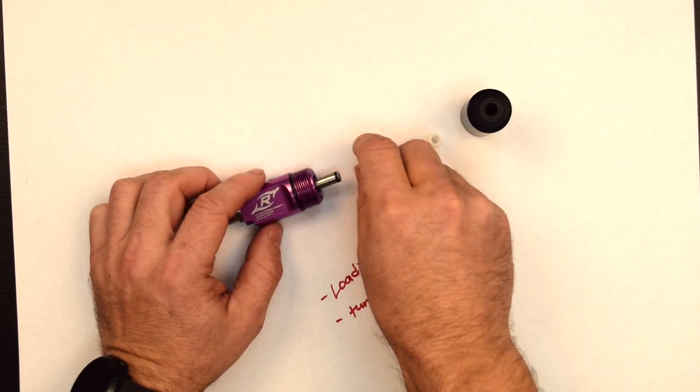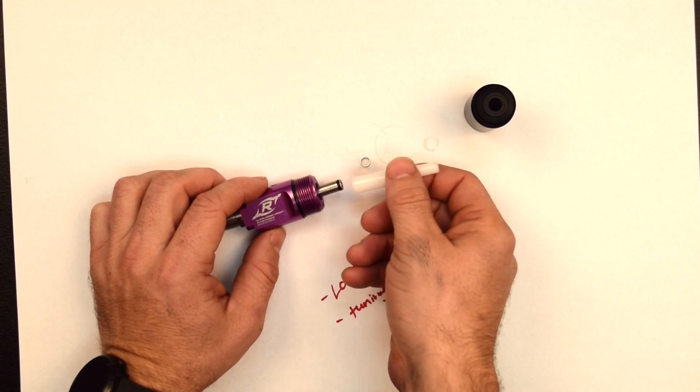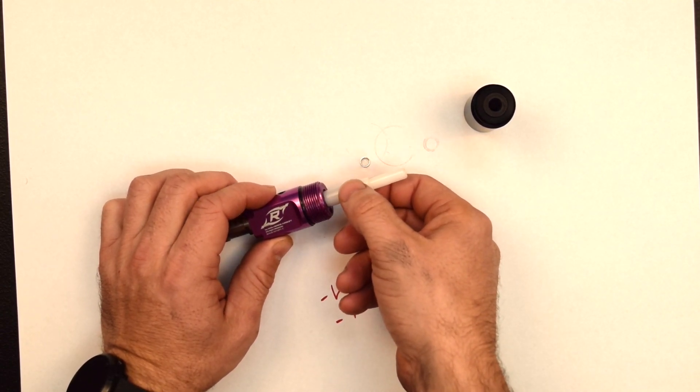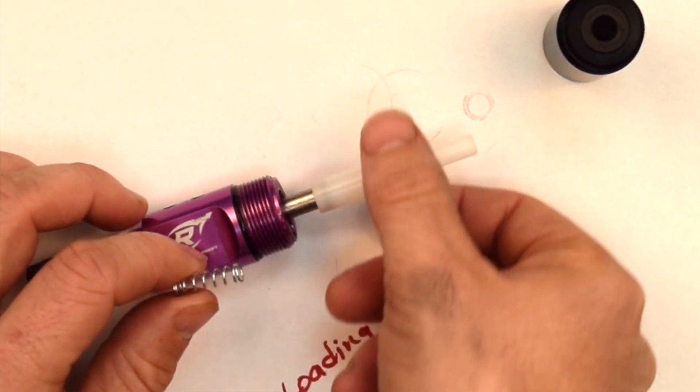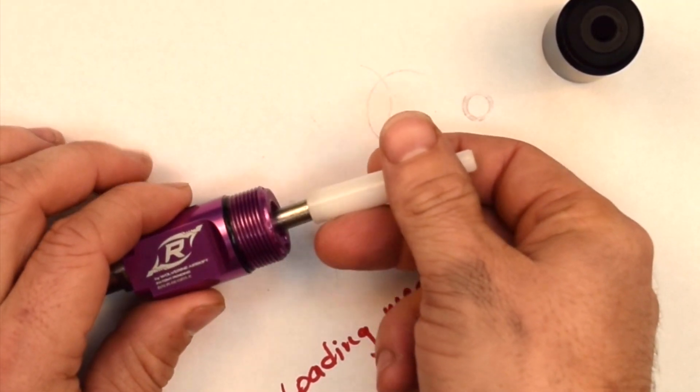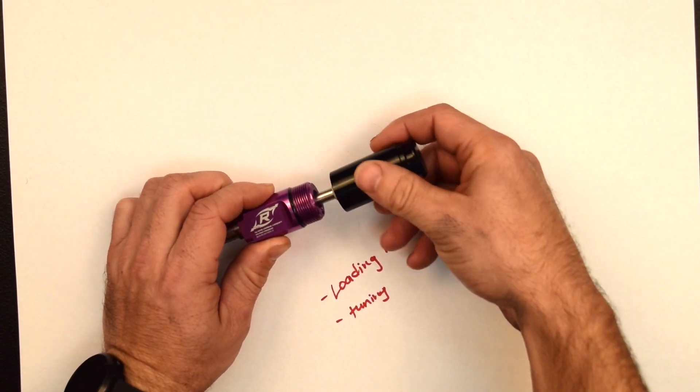So what we've done is now instead of the nozzle being moved in both directions solely by air pressure, the nozzle is actually cycled forward now by a spring which sits in the back of the nozzle right here. And then it's cycled back by air pressure.